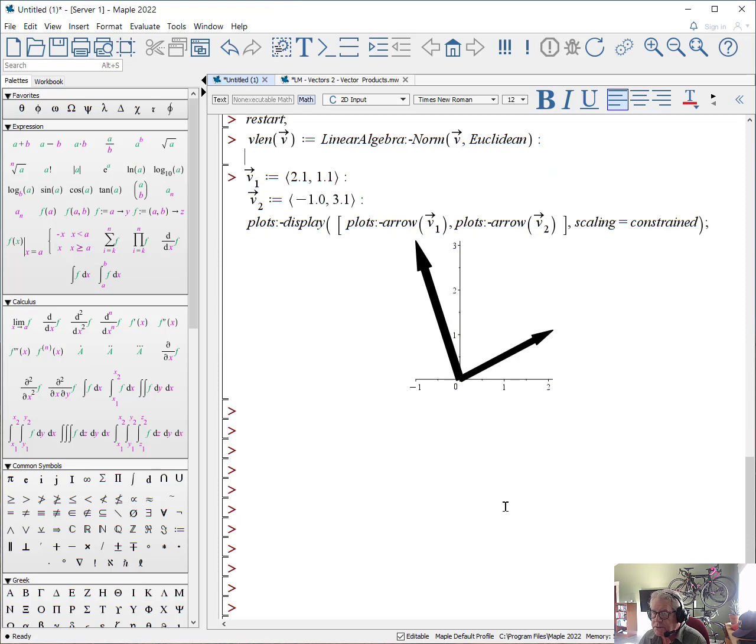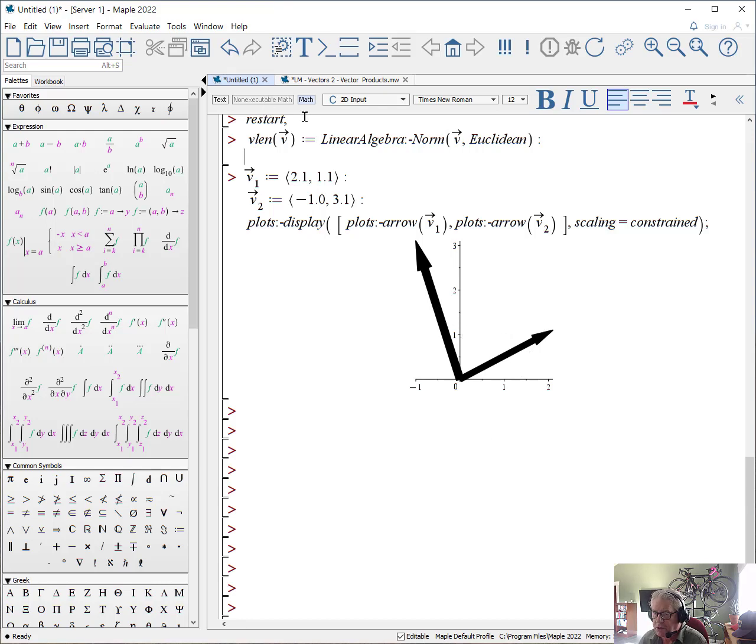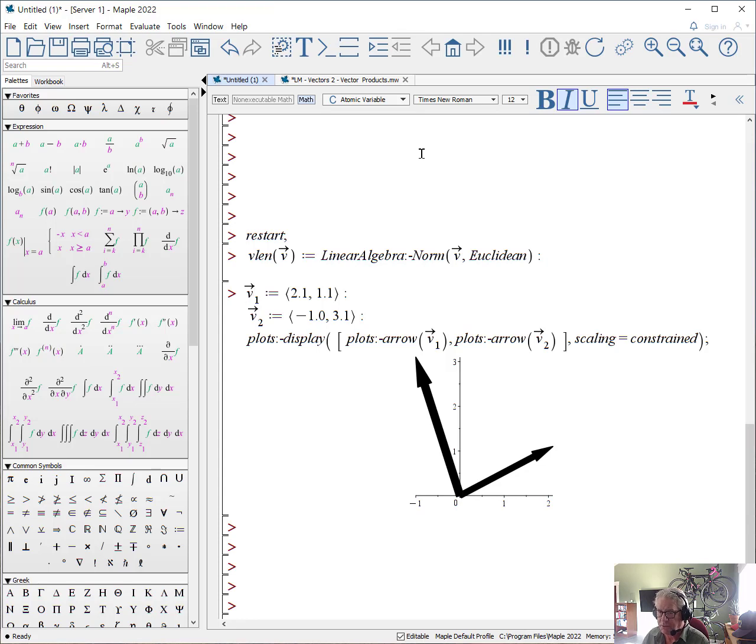Okay, sometimes it's useful to figure out the angle between any two vectors. I've created some vectors here, which I've actually drawn. Let's go up to the restart and hit enter. Let's create this vlength function, which will use Euclidean geometry. Let's create v1 and v2. Let's plot it. And now what we're going to do is we're going to take advantage of the fact that v1 dot v2 must be equal to the magnitude of v1 times the magnitude of v2 times the cosine of the angle between the two.